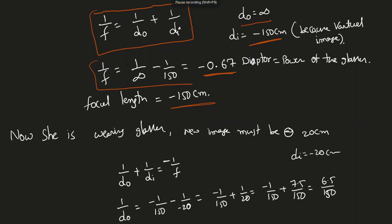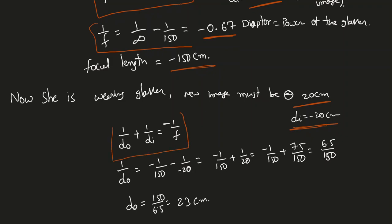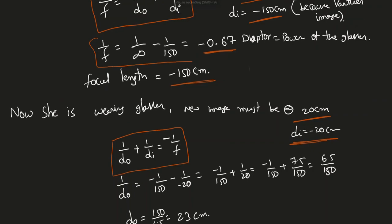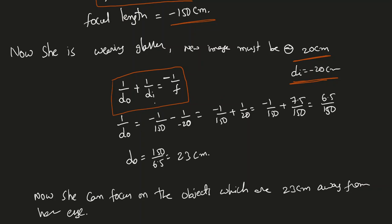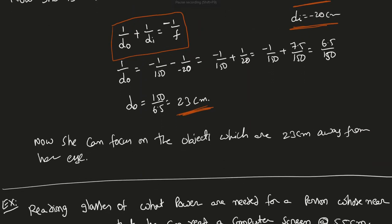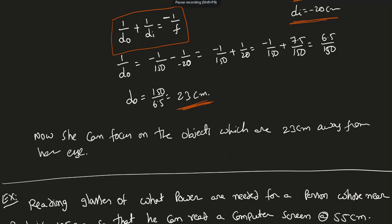Now she is wearing glasses, and I'm assuming no distance between the glass and her eye. Once she starts wearing the glasses, her new near point must be at 20 cm, so the new dᵢ = −20 cm (virtual image). The real image is always inside the eye; the virtual image is in front of the eye. So: 1/d₀ = −1/150 − 1/(−20), which gives d₀ = 23 cm. She can focus on objects 23 cm away while wearing her glasses.